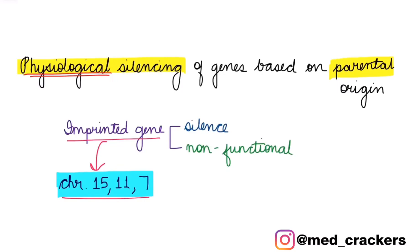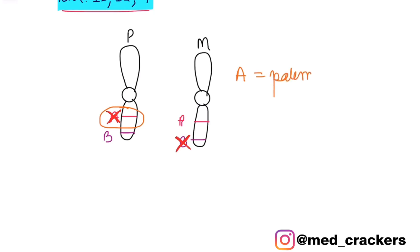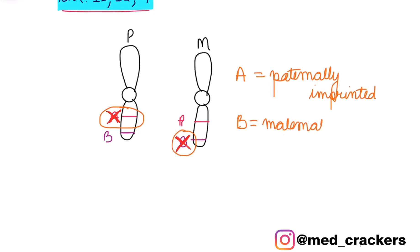Consider two chromosomes: one from the father (the paternal chromosome P) and one from the mother (the maternal chromosome M). Take two genes — gene A and gene B — on both chromosomes. If gene A is physiologically silenced in the father's chromosome, it is paternally imprinted. Similarly, if gene B does not produce proteins in the maternal chromosome, it is maternally imprinted.